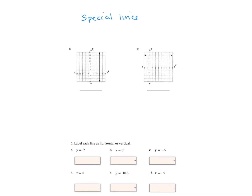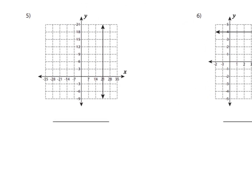Let's look at the first one. Here's the line indicated with the arrows on the end. I'm going to pick some coordinates on this line. This point here is at x=21, y=0. This point here is x=21, y=6. This point here is x=21, y=12. This point here is x=21, y=18.